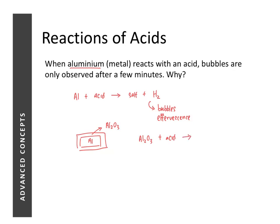A common answer that students give is that there is no reaction, but that is not correct because aluminium oxide, if you can recall, is an amphoteric oxide. So it can actually react with an acid, and when it reacts with an acid, it forms salt and water. The key observation here is that there is no gas produced, and since there is no gas produced, you do not see bubbles at the very start.